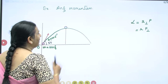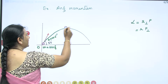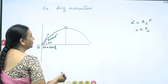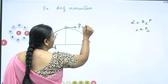What is our requirement? R_perpendicular × P, or R × P_perpendicular. Now, when the ball is at the highest point, it will be having its momentum only along the x-direction — the horizontal direction — which is given by M × uₓ.